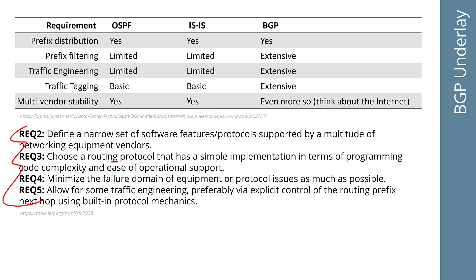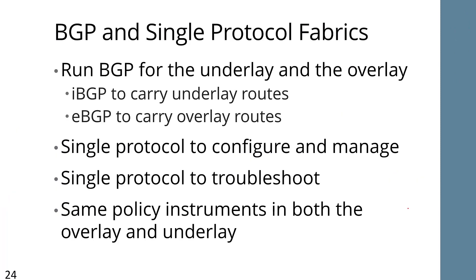You'll see exactly the same sort of concept, has a simple implementation and ease of operational support, minimize the failure domain. This is very good for a path vector protocol because path vectors aggregate or rather summarize topology information in every hop. So you're automatically doing some sort of modularization within the protocol itself. So what some people like to do is they like to do a single protocol fabric and use BGP both for the underlay and the overlay. So what they do is they will run IBGP to carry the underlay routes and EBGP to carry the overlay routes. This is kind of cool. You have one protocol that you're configuring and managing. It seems to make everything a lot simpler. You have one trial protocol to troubleshoot. You have the same policy instruments in both the overlay and the overlay for the most part. Things are slightly different in IBGP and then EBGP in terms of best path calculations, stuff like that. But you can work around all of that stuff.